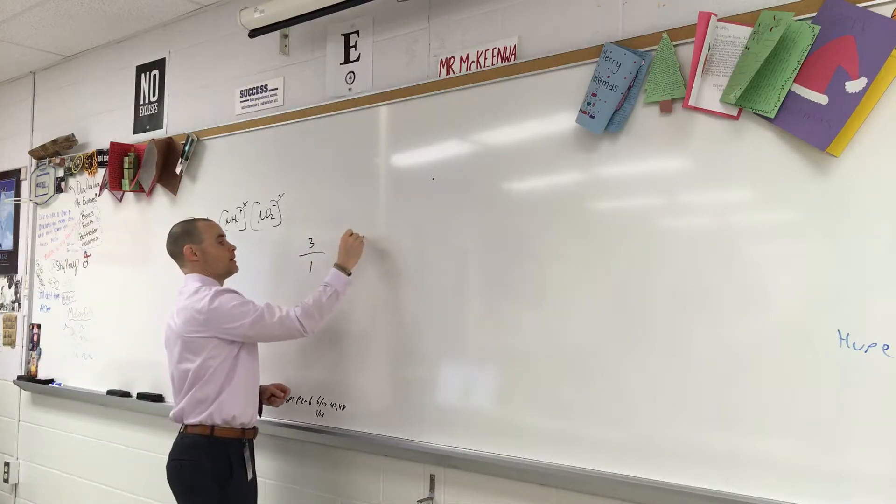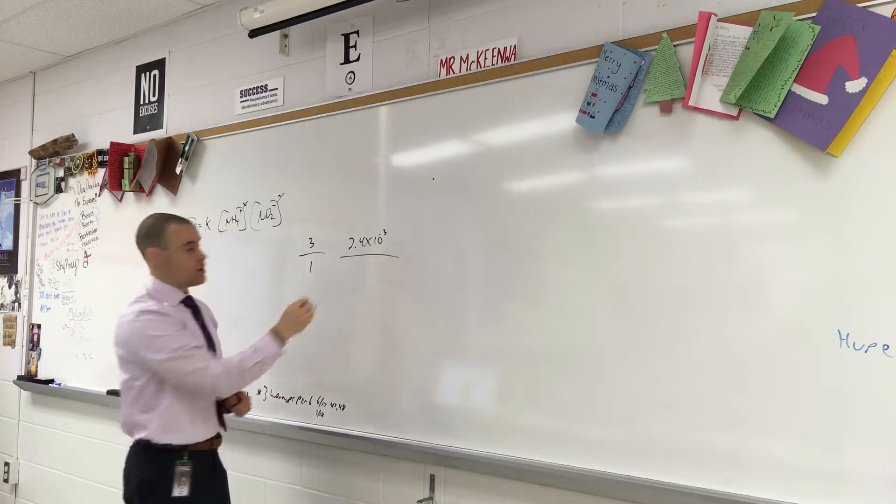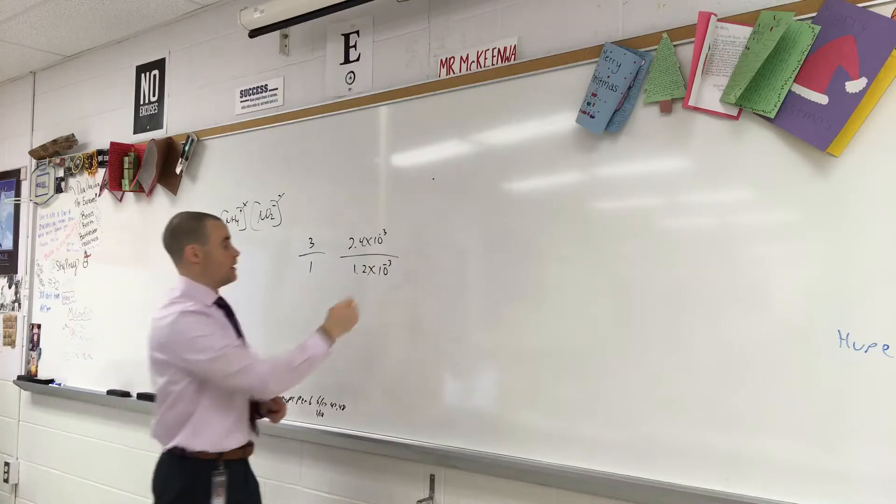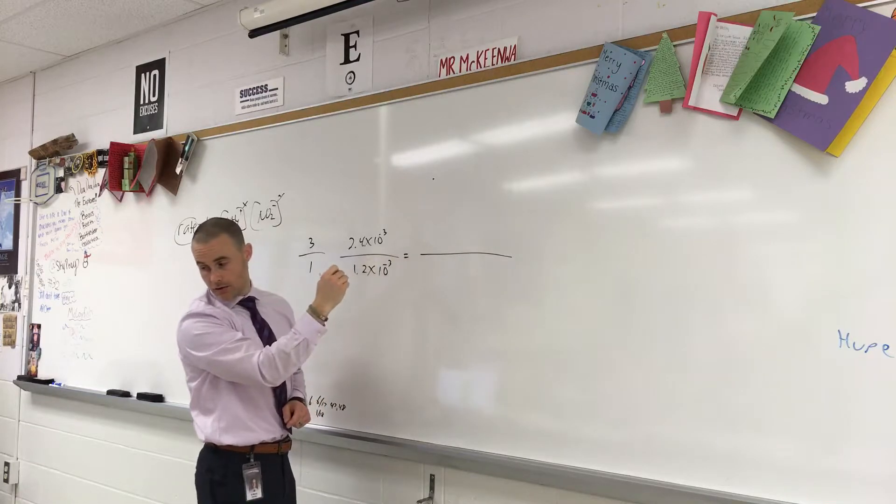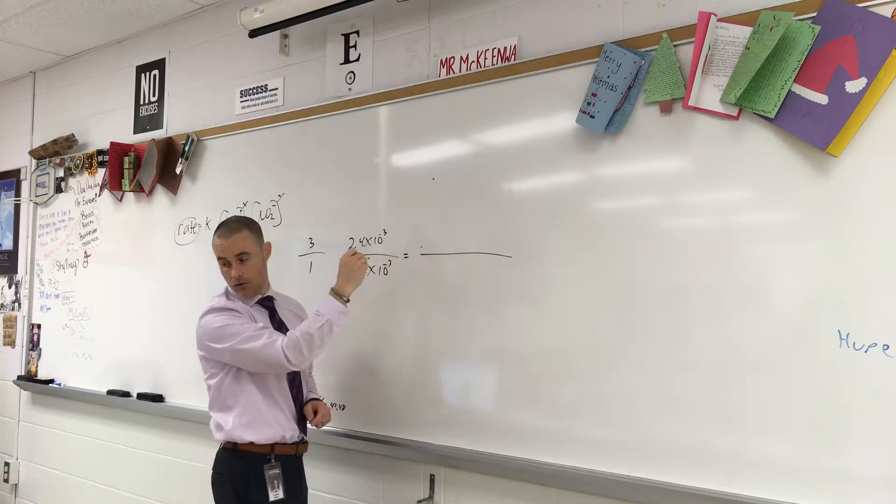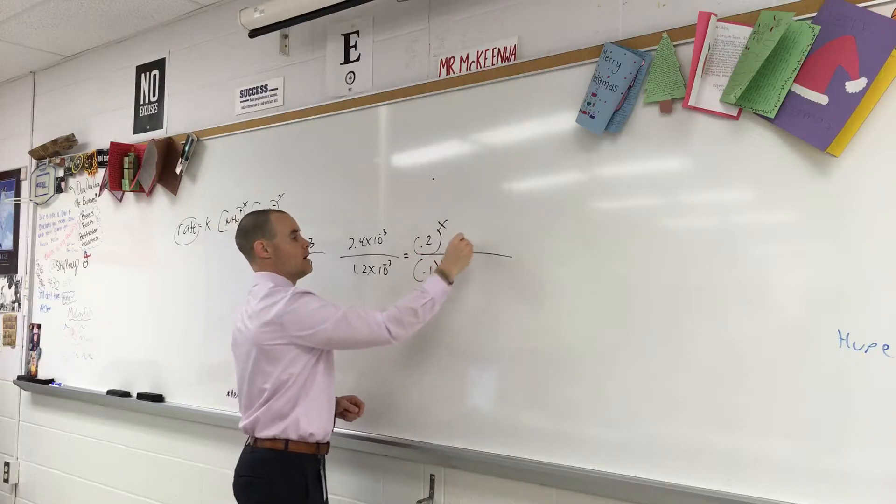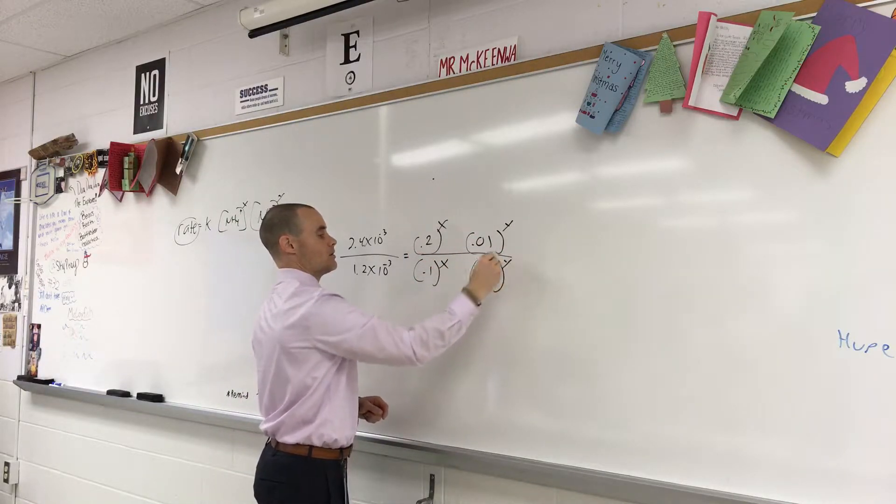2.4 times 10 to the negative 3rd. That's the rate. Divided by 1.2 times 10 to the negative 3rd. And that equals, and we're going to have 0.2, no, yeah, 0.2 to the x divided by 0.1 to the x, 0.01 to the y, divided by 0.01 to the y.